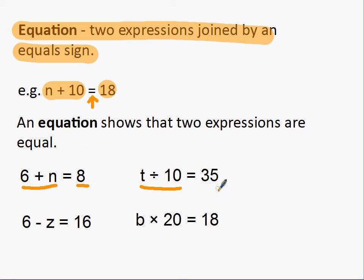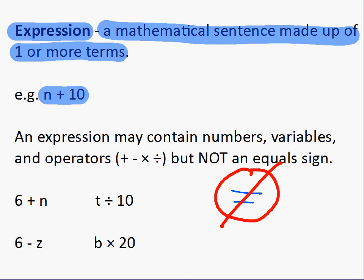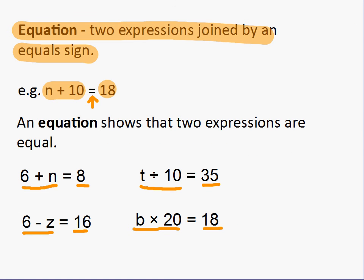In this equation, t divided by 10 is the same as or is equal to 35. Here, six take away z is equal to 16. Here, b times 20 is equal to 18. So that's the difference between an equation and an expression. An expression does not have an equal sign, but an equation does. And if you look at the word, there's a big giveaway. Equa, equal. It comes from or looks like the word equals. That's a way to tell the difference between an equation and an expression.